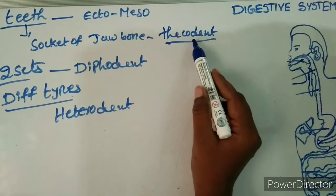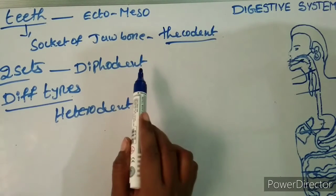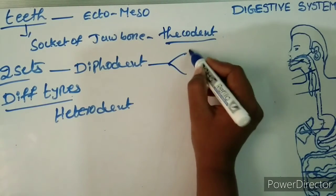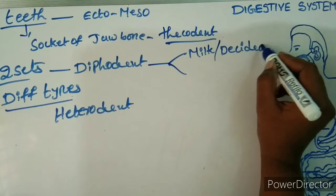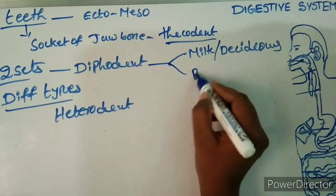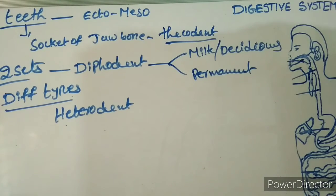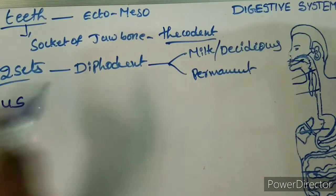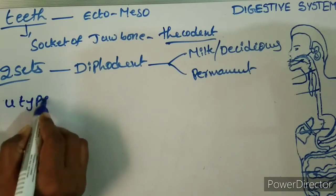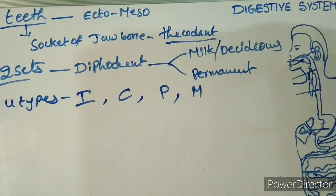Thecodont means teeth are embedded in the socket of the jaw bone. Diphyodont means two sets of teeth in a lifetime: the first set is called milk teeth or deciduous teeth, and the second is the permanent teeth. Since humans have four different types of teeth — incisors, canines, premolars, and molars — they are called heterodont.